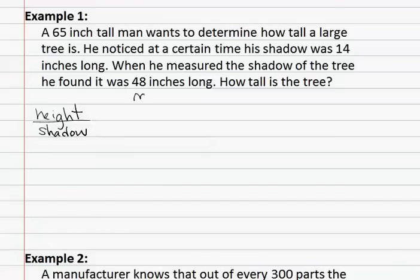We are also going to make the first fraction for the man and the second fraction for the tree. We know that the man's height was 65 inches. We also know that the man's shadow was 14 inches. And this is going to be equal to the tree, in which we do not know the height of the tree. That is what we are looking for, but we do know that the shadow of the tree is 48 inches.